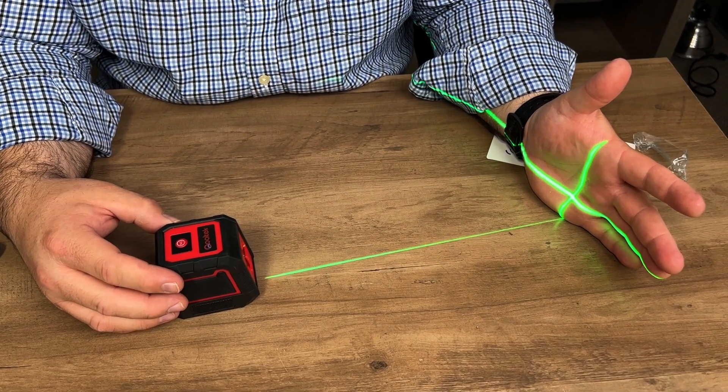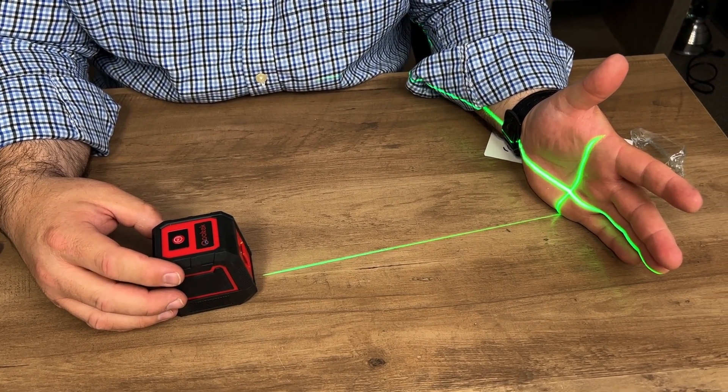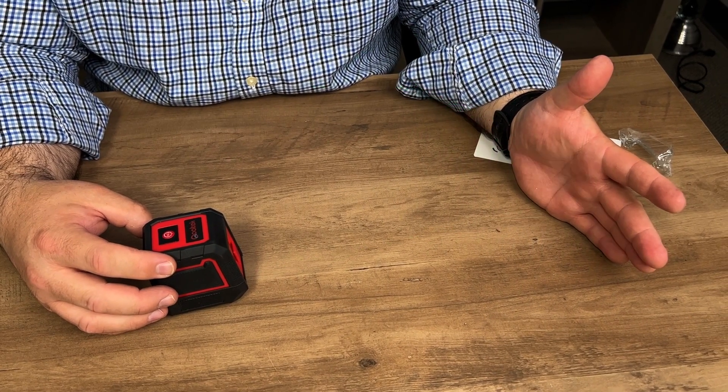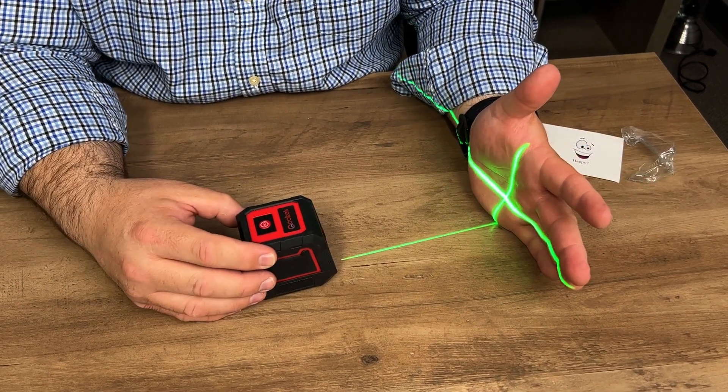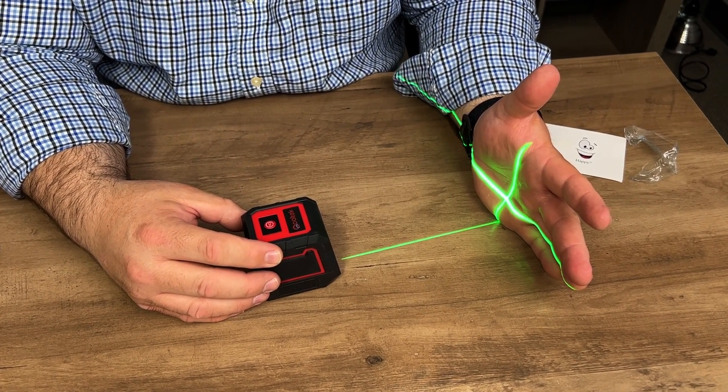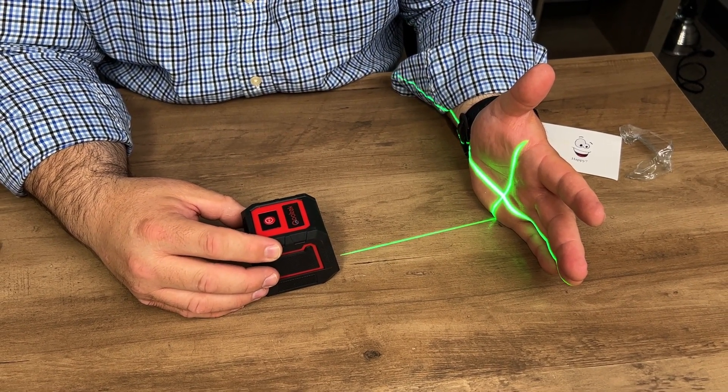So even with me tilting it, the horizontal line stays level until you get so far. And then it'll flash letting you know it's past its limit there. So it does have a limit, but it will self-level to a degree, as you can see.